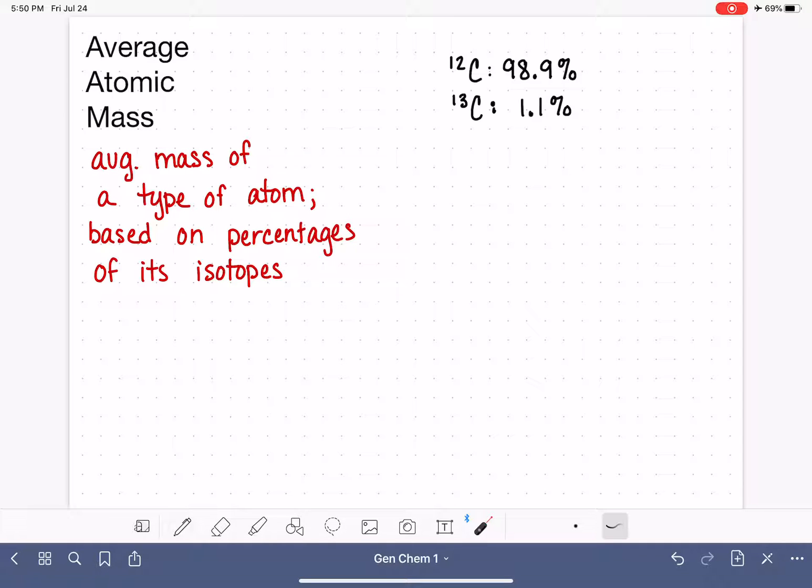In order for us to calculate the average mass of any given type of atom, we're going to calculate that average the same way we would calculate any average. Let's continue using carbon as the example. We will simply take the percentage of the isotope and multiply it by its mass.